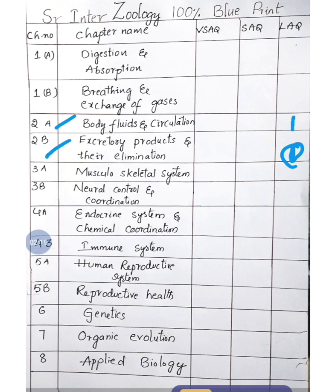One more long answer chance comes from 5A, the Human Reproductive System. In this chapter there are three topics — definitely either male or female reproductive system, or development of the embryo. From the Genetics chapter, one more long answer is possible. So a total of three long answer questions will be given, out of which you should write two.